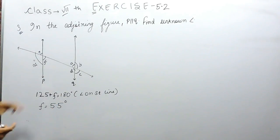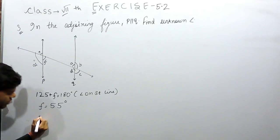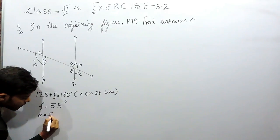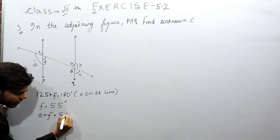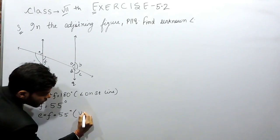Now, if F is equal to 55 degrees, then E and F are vertically opposite. So E equals F, that is equal to 55 degrees, because of vertically opposite angles.